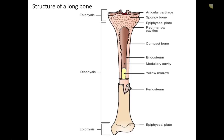The structure of a long bone: when describing changes to the outside of the bone on an x-ray, the ends of the bone are called the epiphysis and the shaft is called the diaphysis. Looking at the internal structure of a long bone, there is articular cartilage along the joint surface, spongy bone — also called cancellous bone — epiphyseal plate, red marrow cavities, compact bone, endosteum, medullary canal, yellow marrow, periosteum, and the epiphyseal plate, which is the growth plate.